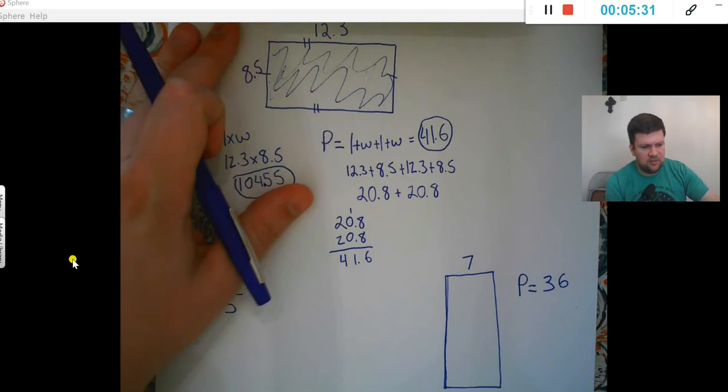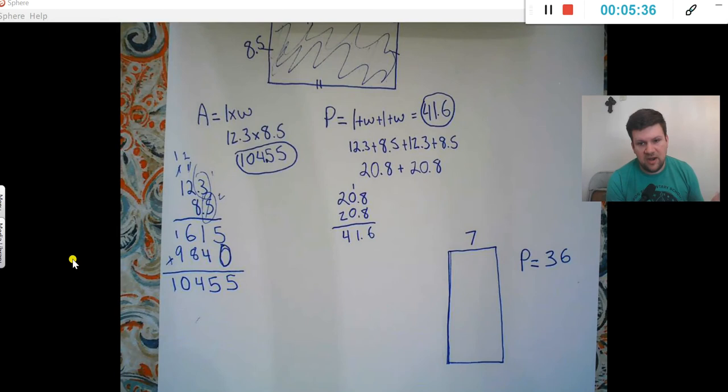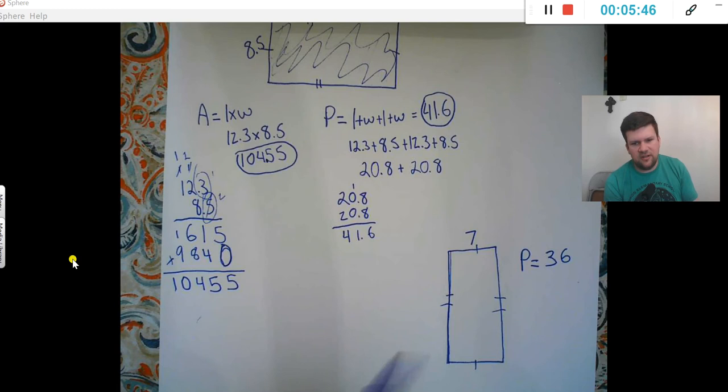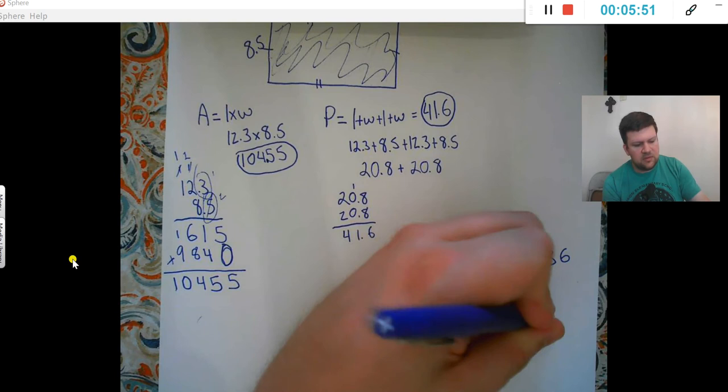Okay, I want to go through a quick example of another problem you could possibly see. You'll see a lot more in 6th, 7th grade, and on up. But you might have a rectangle that says, okay, this side is 7, and the perimeter is 36. And it wants to know, what is the area?